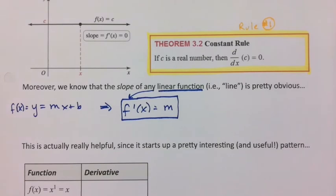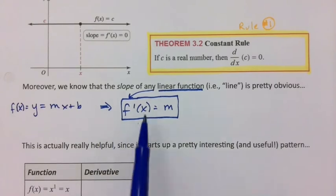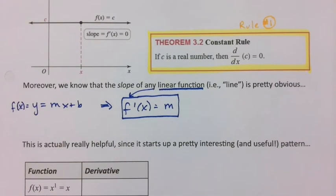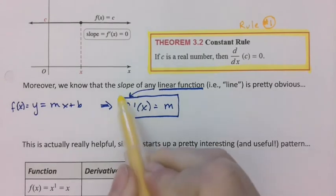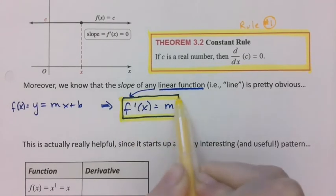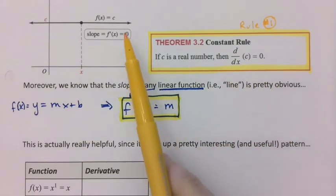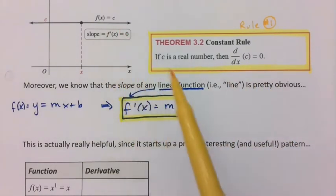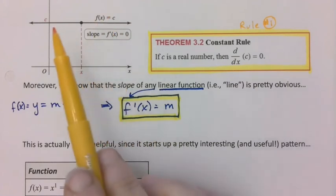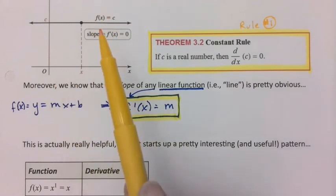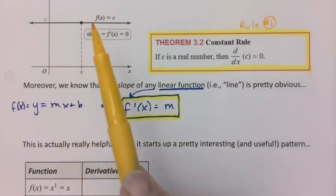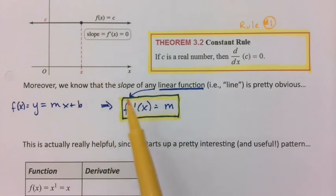So that one's not really a rule on the sheet. It's just kind of obvious, but it will help us derive this rule. Namely, the derivative of any line, diagonal line and horizontal line, is equal to the slope. This one up here is a special case of this because a horizontal line has a slope of zero. Because a horizontal line is basically y equals b or y equals c. So that's a horizontal line, so slope is zero. And this would work for diagonal lines as well.